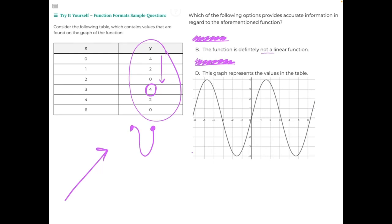B could possibly be correct because it says it is not a linear function, and that's true. However, D might be more correct if the graph perfectly matches the table shown to the left.